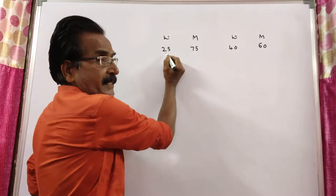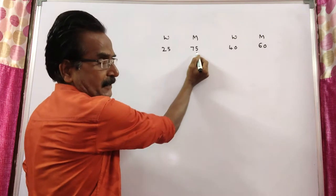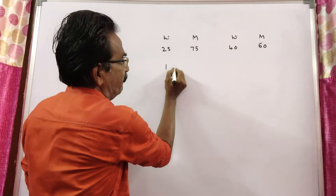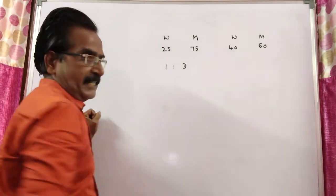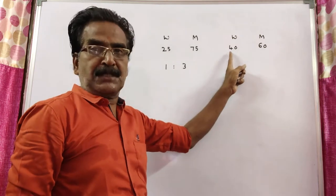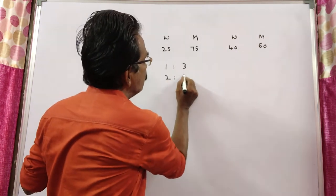Initially water 25%, milk 75%, means the ratio of water to milk is 1 to 3. After adding 40 liters of water, the ratio becomes 2 to 3.